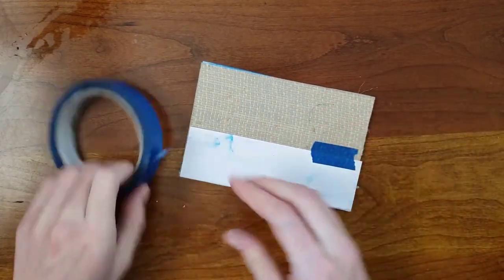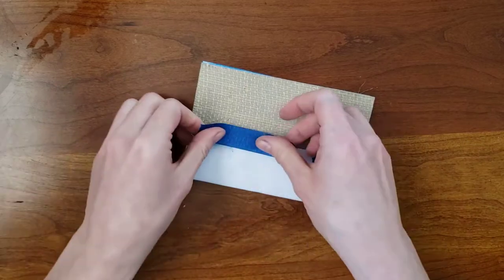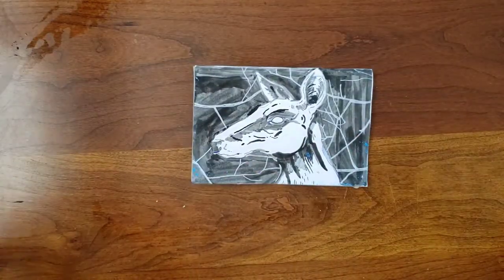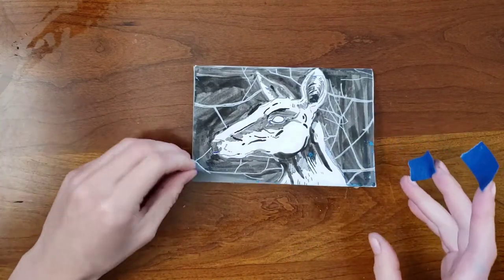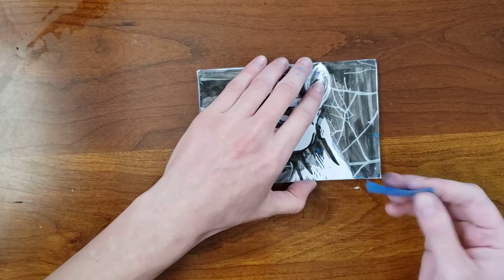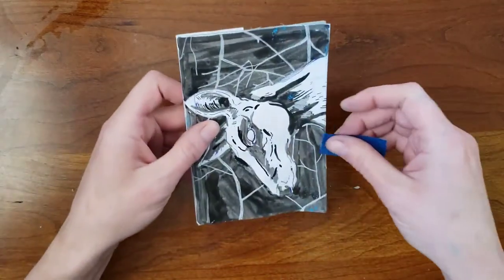The type of tape you use doesn't really matter as long as it doesn't come off the linoleum. I tape the bottom as well and if the sides need it, I do those too.